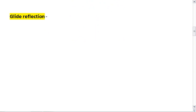We do have a special kind of composition. It's called a glide reflection. A glide reflection is a composition of two transformations.